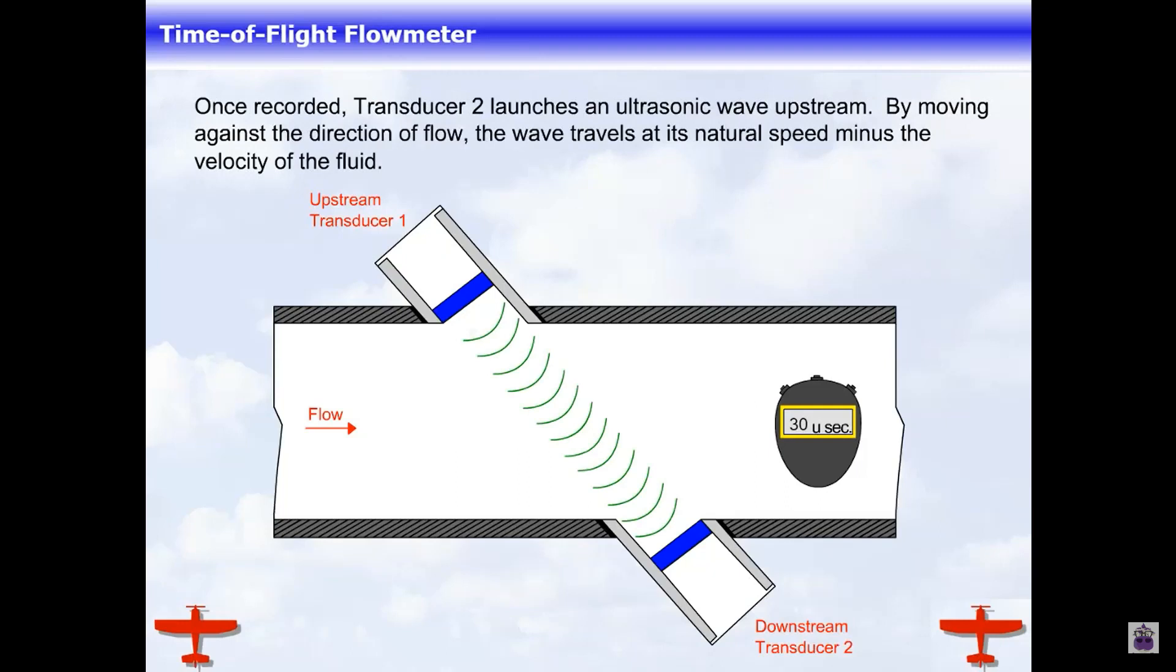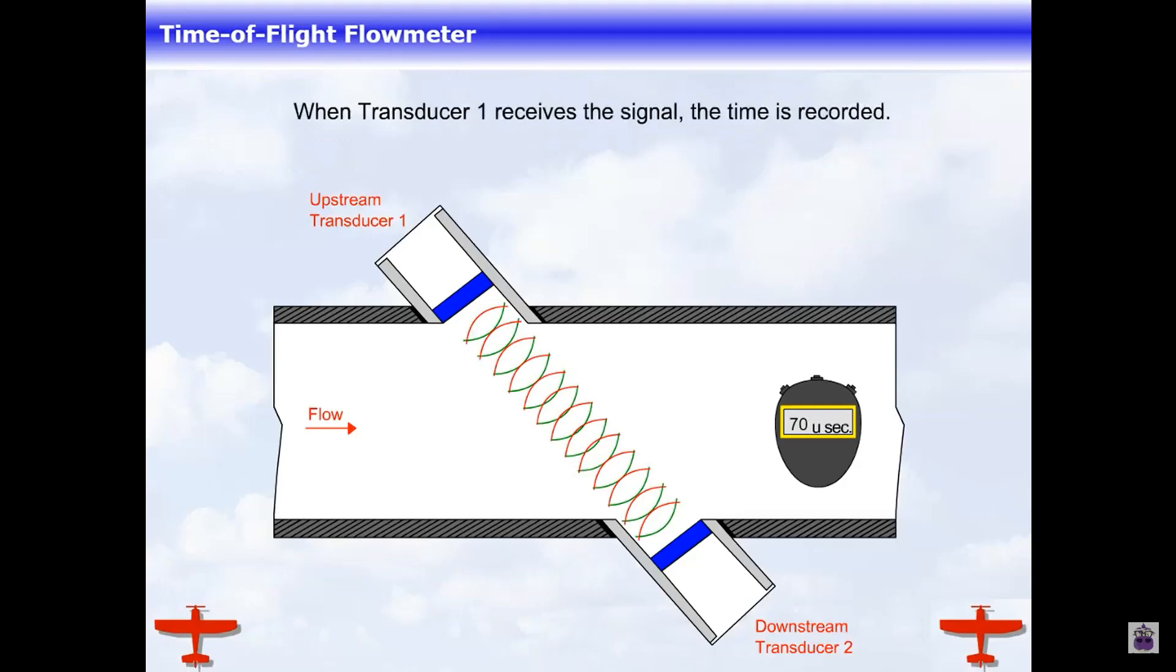Once recorded, transducer 2 launches an ultrasonic wave upstream. By moving against the direction of flow, the wave travels at its natural speed minus the velocity of the fluid. When transducer 1 receives the signal, the time is recorded.